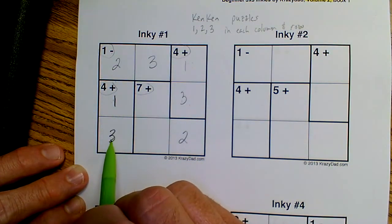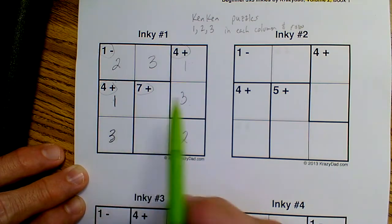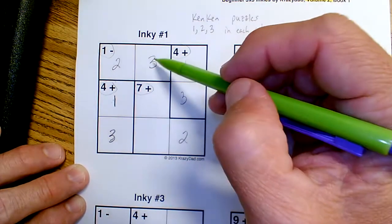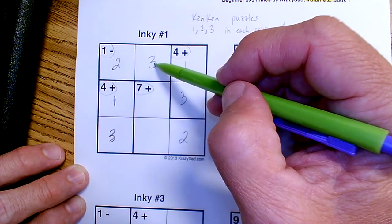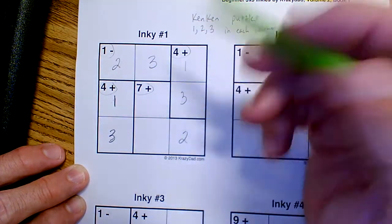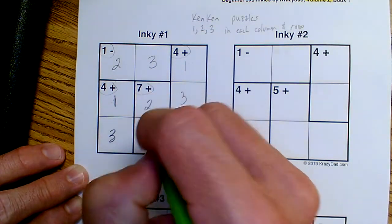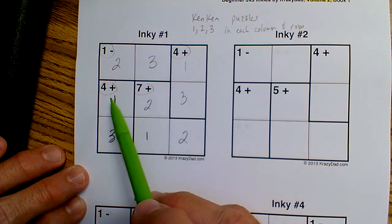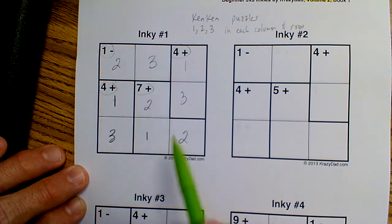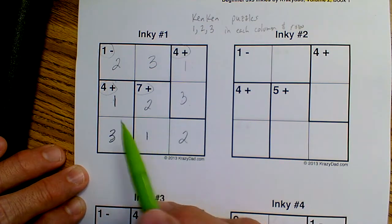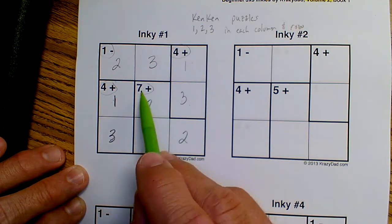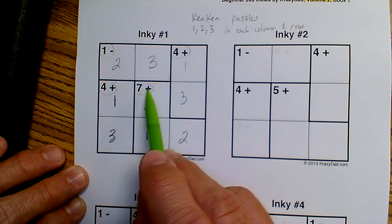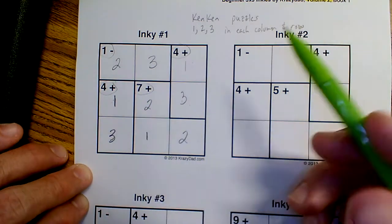So 2, 1, and 3. And then, if I have a 3 here, I have to have a 2 here, and a 1 there. But I've got a problem. 1 and 3 is 4. 2 plus 1 is 3, plus 2 is 5. And I need to add up to 7. So that does not work.